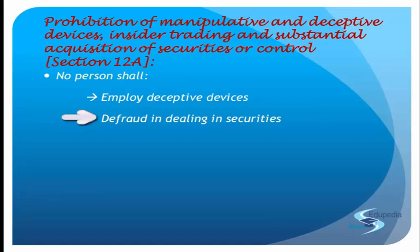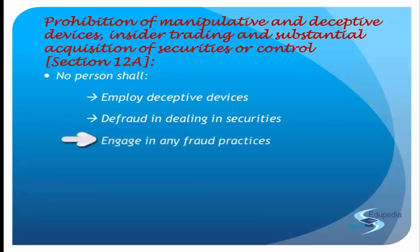Second, Section 12A says no person should be involved in any defraud — that means you should not employ any device, any scheme, or any artifice to defraud in connection with the issue or dealing in securities. This applies to companies which are already listed or even those proposed to be listed. No person shall directly or indirectly engage in any act, practice, or course of business which operates as fraud or which would deceive upon a person.